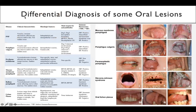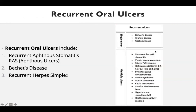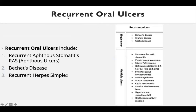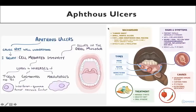After multiple ulcers — both acute and chronic — we now have recurrent oral ulcers. In recurrent oral ulcers we will study three conditions: recurrent aphthous ulcers, Behçet's disease, and recurrent herpes simplex. Recurrent aphthous ulcers — also known as canker sores — have an idiopathic cause, not well understood, maybe immune-mediated.